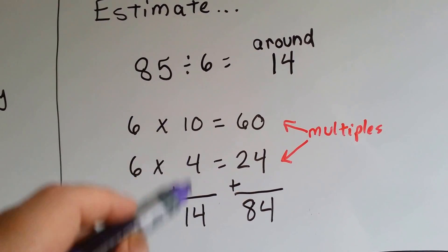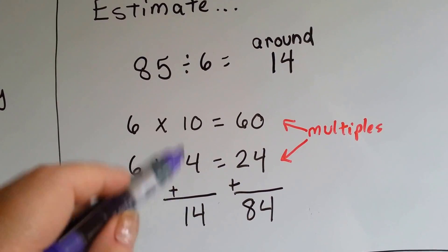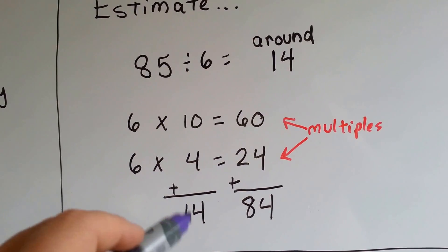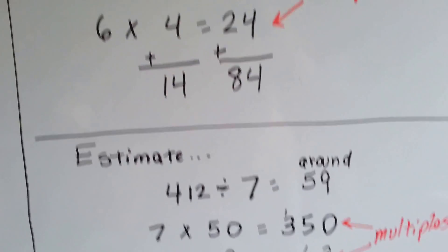So, what we do is we add the factors, because the multiples got close. We add the factors of 10 and 4, which is 14. So, our estimate is around 14. So, let's take a look at this one.